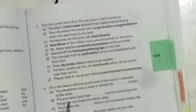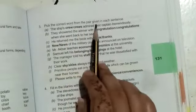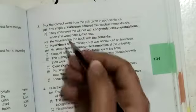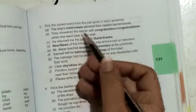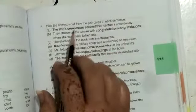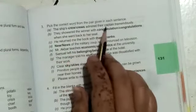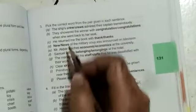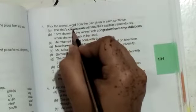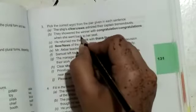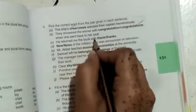After this we have the third exercise related to this topic: pick the correct word from the pair given in each sentence. Now we have to pick a correct word from the pair which is given over here. The first statement is: the ship's crew admired their captain tremendously. Its answer is the ship's crew, the singular one. They showered the winner with congratulations when she went back to her seat. He returned me the book with thanks.